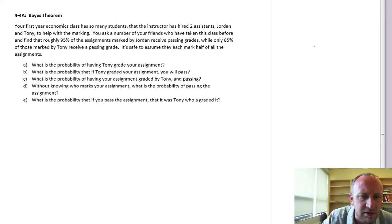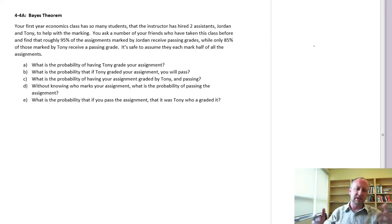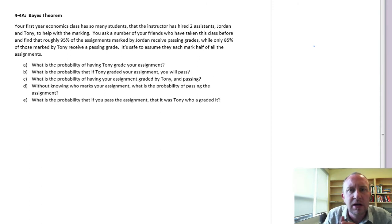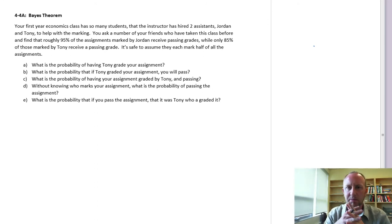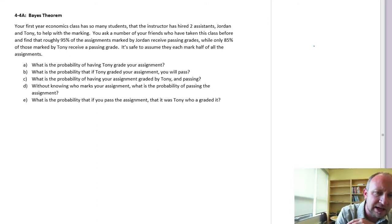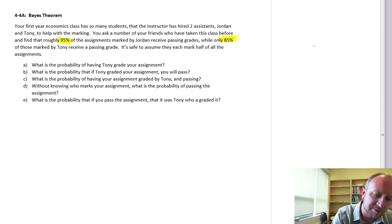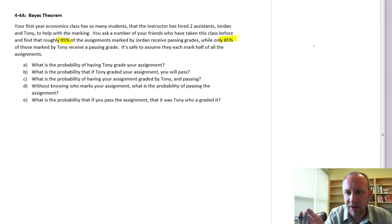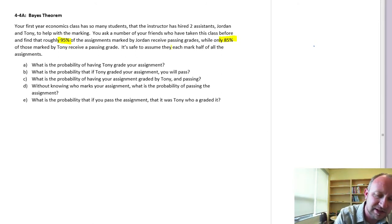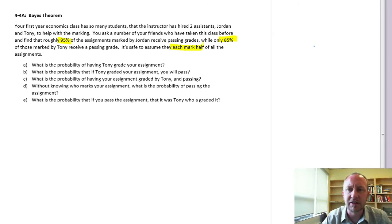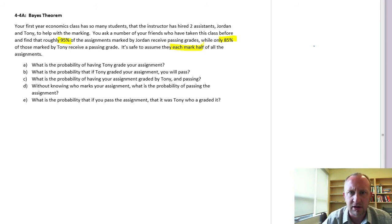Let's read through our problem. We have a first-year econ class with lots of students, so the instructor has two assistants to help with the marking: Jordan and Tony. I want to find out about these markers. I've learned that 95% of assignments marked by Jordan pass, 85% of those marked by Tony pass, and it's safe to assume they each mark about half of all assignments. Hopefully I get Jordan — she seems to give easier marks.